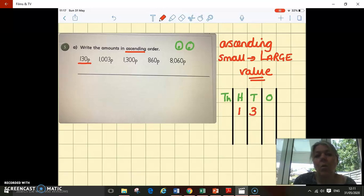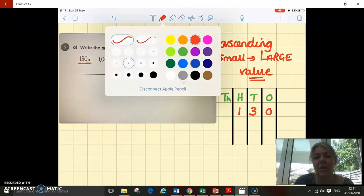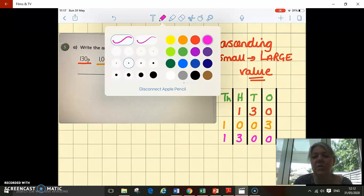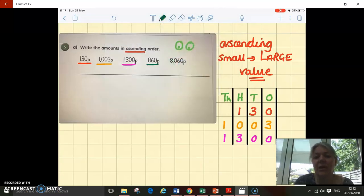I'm going to pop in 130 pence. I can see it's got 100, three tens, and no ones. And I'm going to add in my next value, which is 1,000, no hundreds, no tens, and three ones. I'm going to continue until I have put all the values into my place value chart.